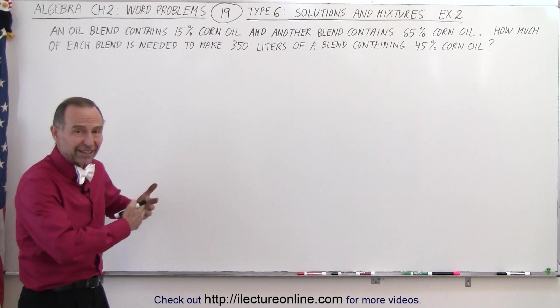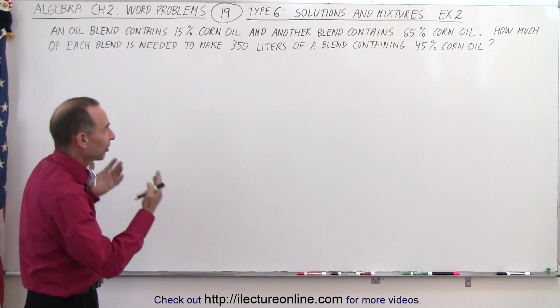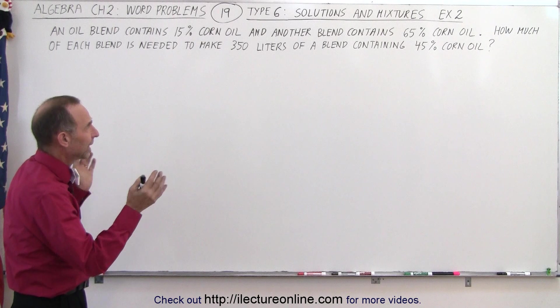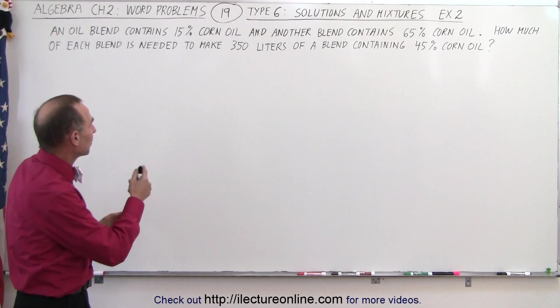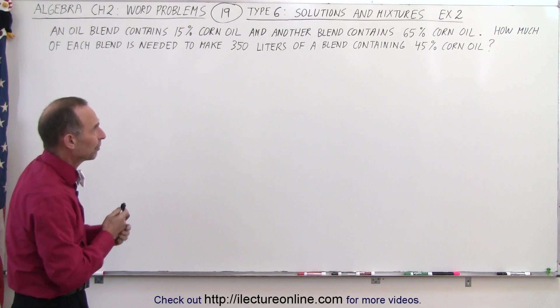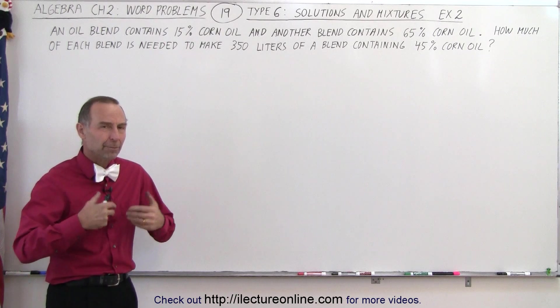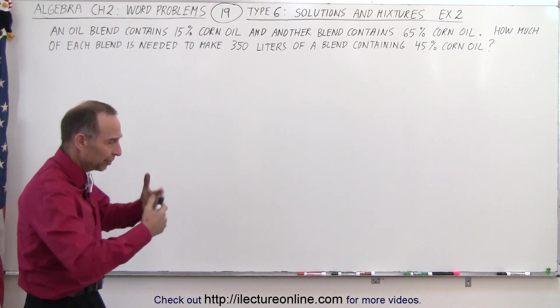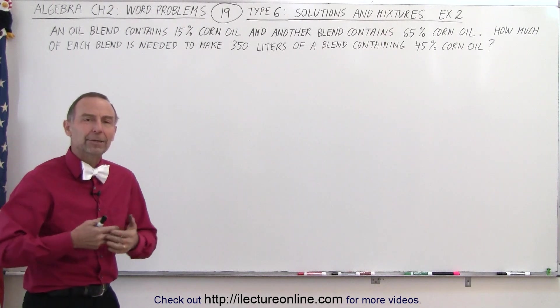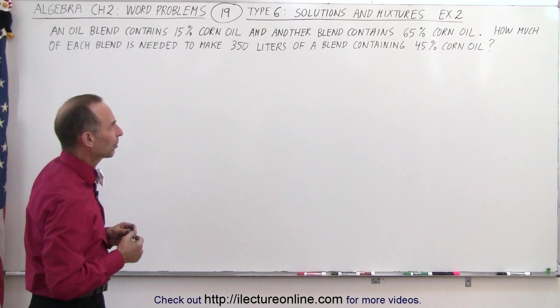Again with a solution, in this case a blend that contains various percentages of corn oil, and together we mix them together, and we should come up with 350 liters of a blend containing 45% corn oil. So the approach will be the same to help us get grounded in the methodology of how to solve these kinds of problems.